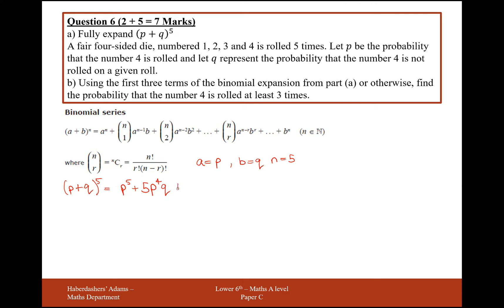The next term is 5 choose 2, which is 10, times P cubed — because 5 minus 2 is 3 — times Q squared. You can see the pattern here on the P's: it's going 5, 4, 3. The next one will be a 2, then a 1, then a 0. And for the Q's, it's gone 0, 1, 2, and it will carry on like that.